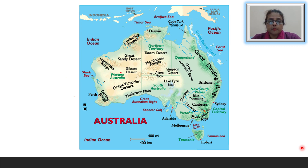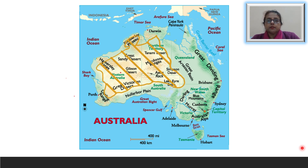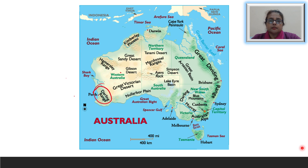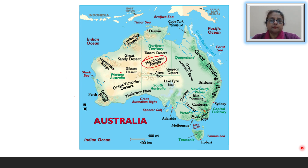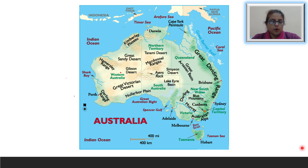There are a few mountains that rise from the flat plateau. They include the Darling Range, the Hammersley Range, the McDonald Range, and the Musgrave Range.